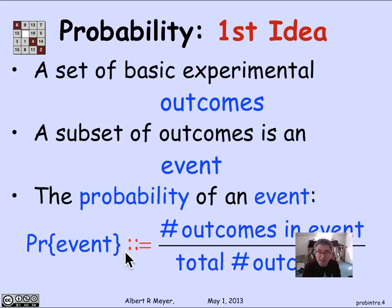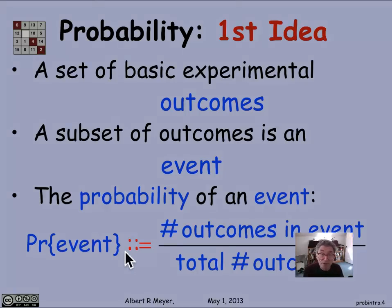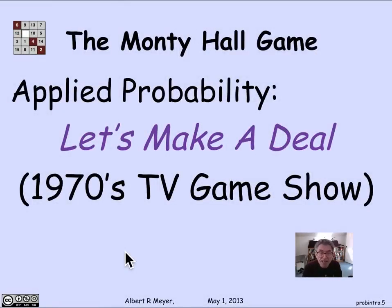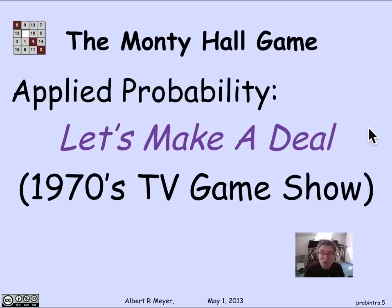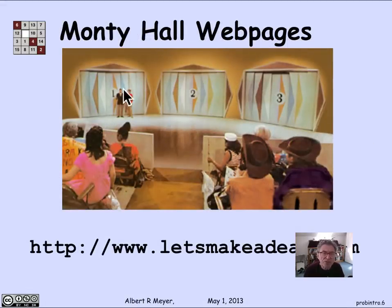Now let's look at an example which illustrates why this first idea needs to be refined. We turn to a game that was really famous in the 1970s — an enormously popular TV game hosted by a man named Monty Hall. The actual name of the show was called Let's Make a Deal, but we'll refer to it as the Monty Hall game. The way the show worked was roughly that there were three doors — door one, door two, door three — as shown in an actual picture of the stage set.